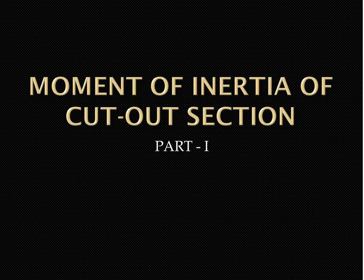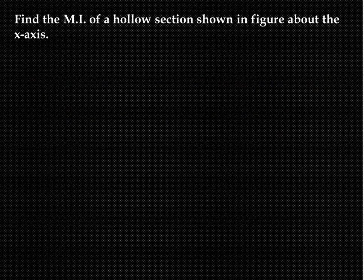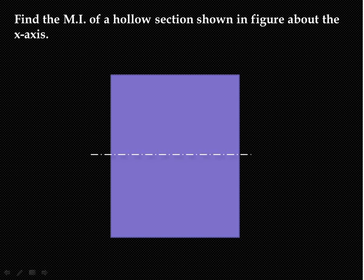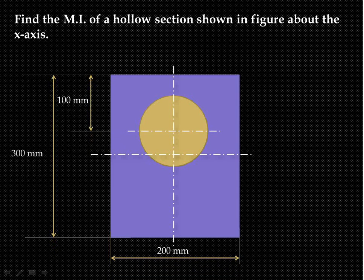Let us try to understand how to find out the moment of inertia of a cutout section. We want to find the moment of inertia of this particular section. Here we have shown a rectangle of width 200 mm and depth 300 mm, and a circle of diameter 150 mm is cut out from this. We have to find out the moment of inertia of this remaining portion.